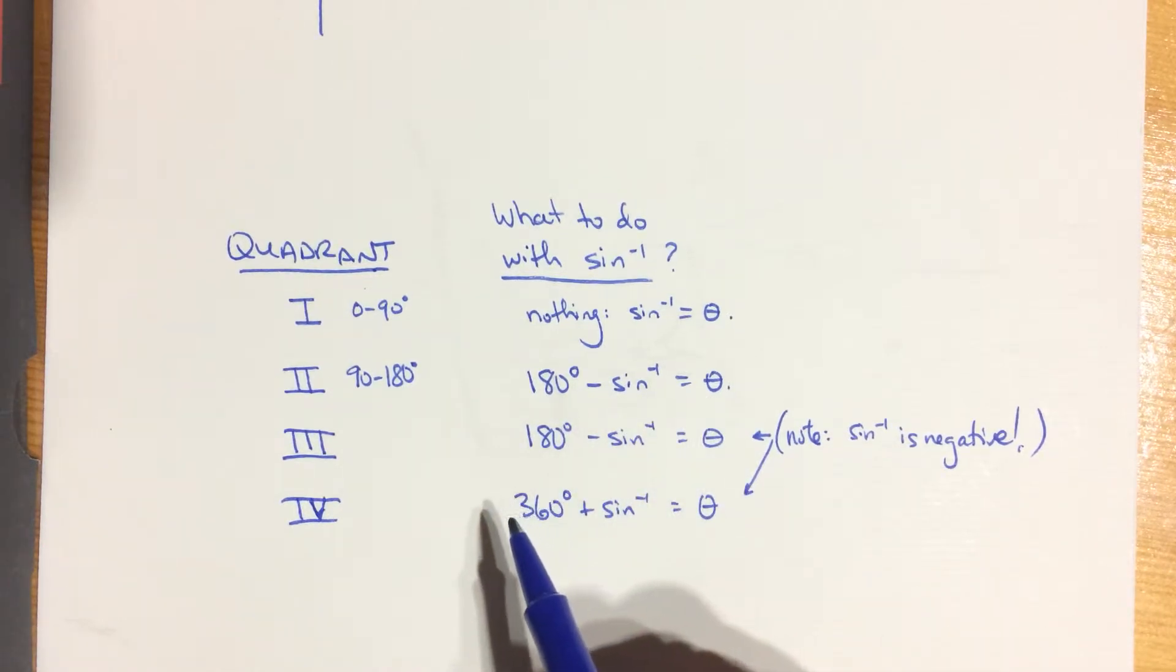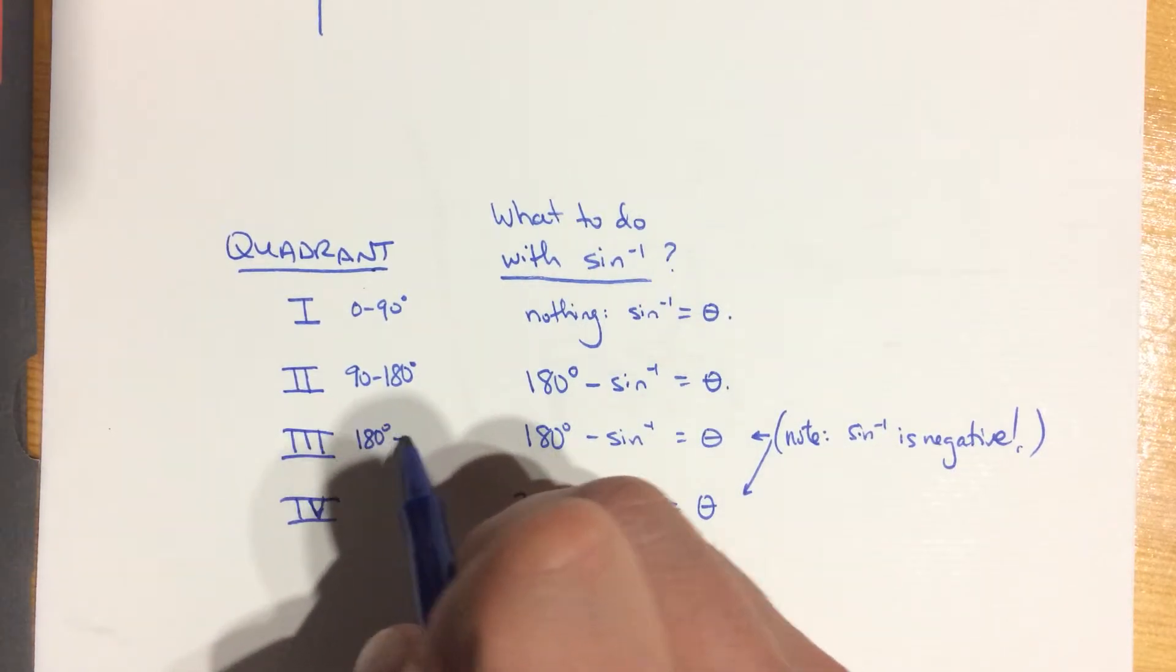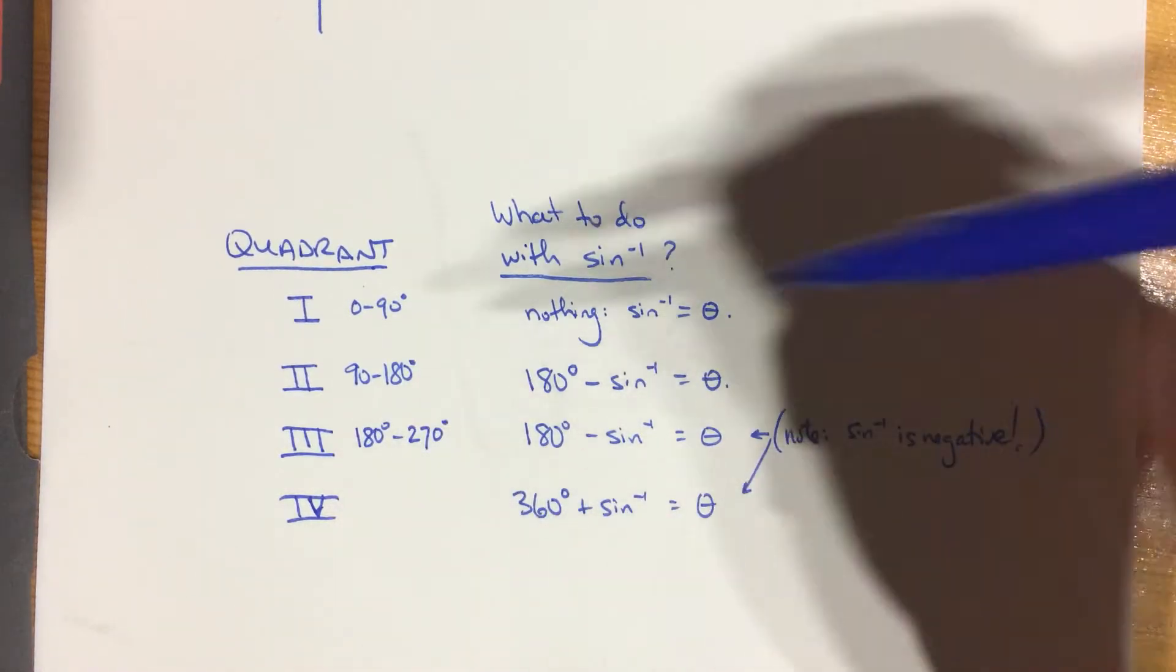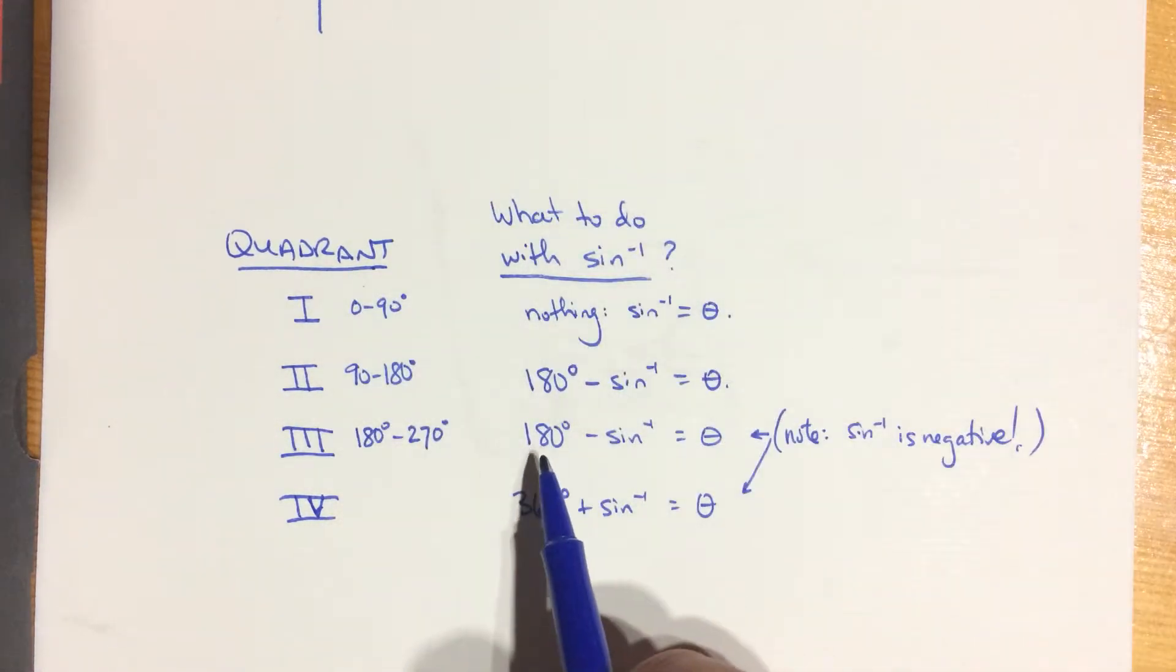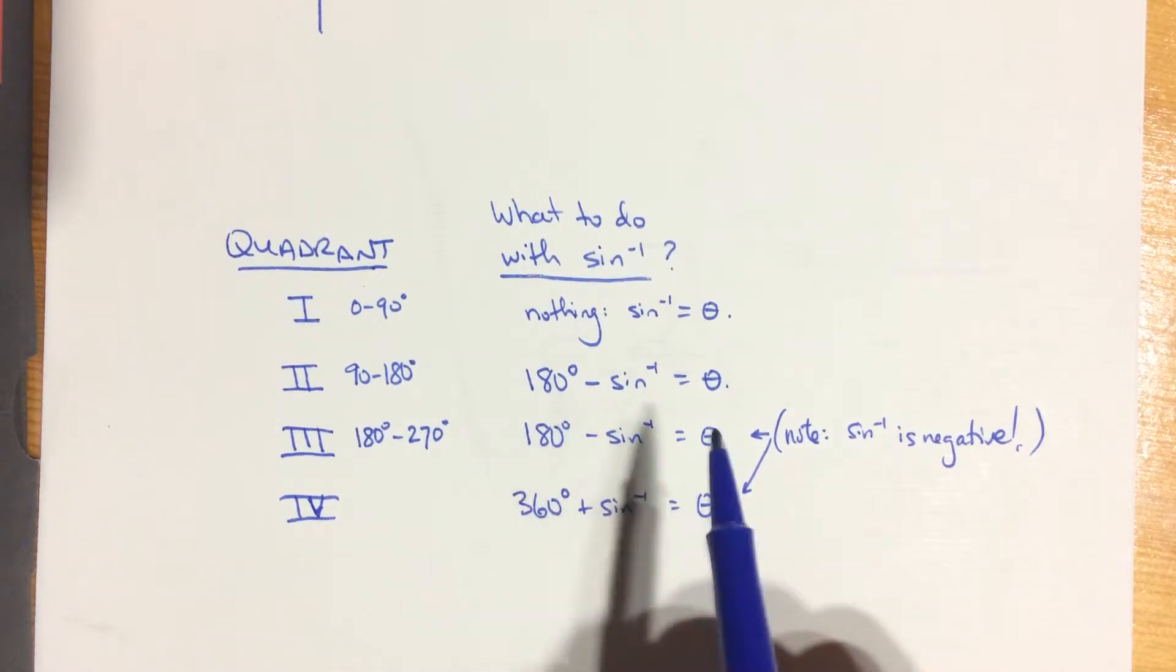If you're in the third quadrant, that is you're more than 180 but less than 270, that's the bottom left corner, then you take 180 and subtract again. So you're doing the same thing in this case, but in this case here, the sine inverse function is giving you a negative value, a negative angle.